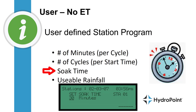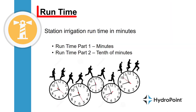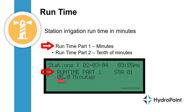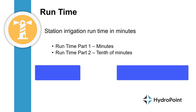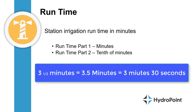Then you'll program the soak time allowed between those cycles. Another important station setting in this case is the setting called Usable Rainfall. The first thing you'll program in for a station is the run time — the station irrigation run time in minutes. Runtime part 1 is minutes; runtime part 2 is tenths of minutes. So if you program a station to run for 3.5 minutes, you'll get 3.5 minutes of irrigation.